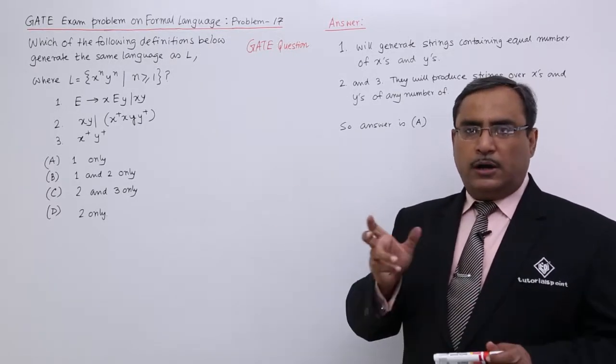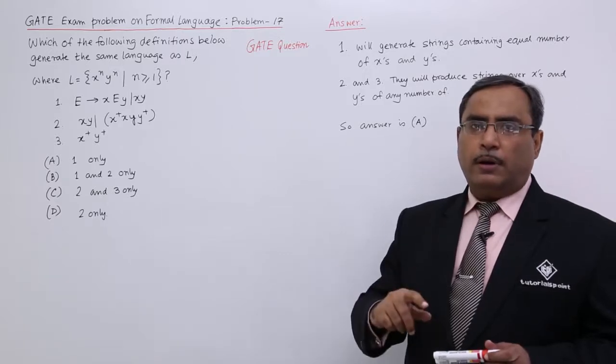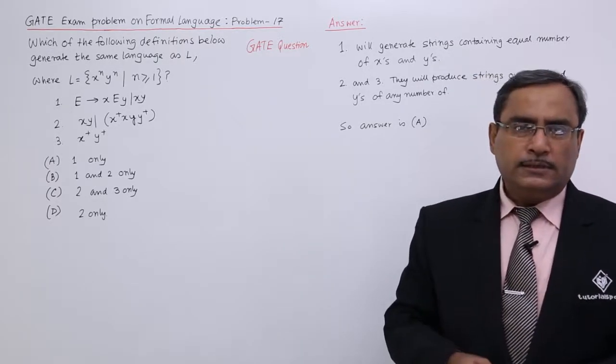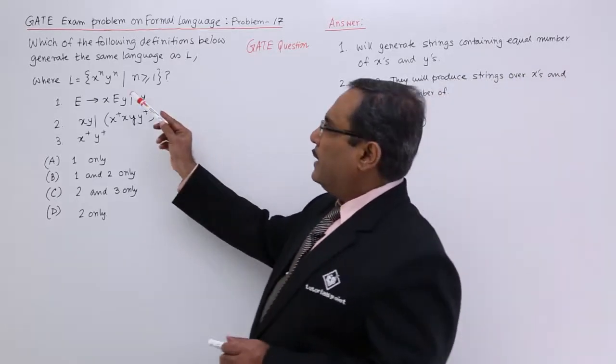The x will be clubbed and y will be clubbed. Equal number of x will come prior to y in the sentence. That is my L.